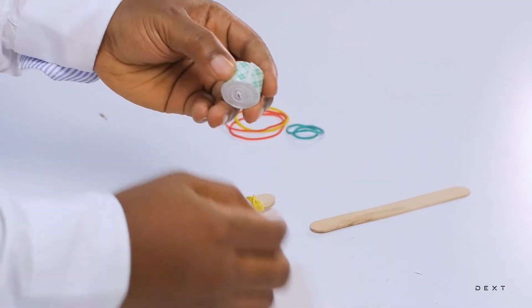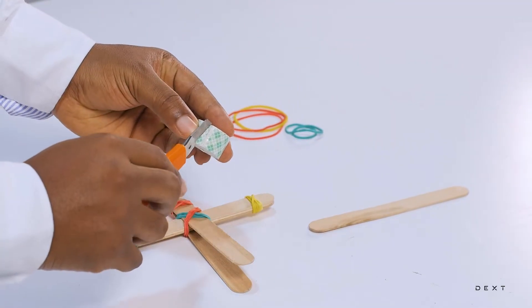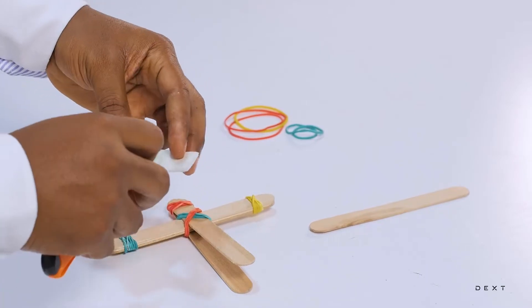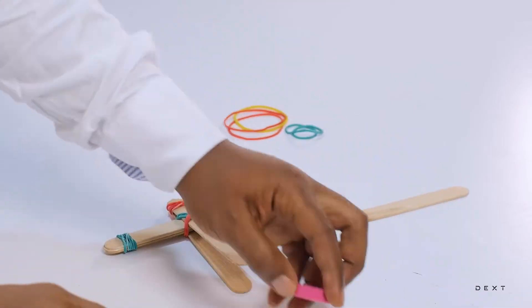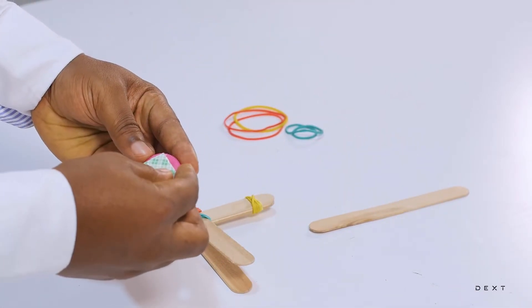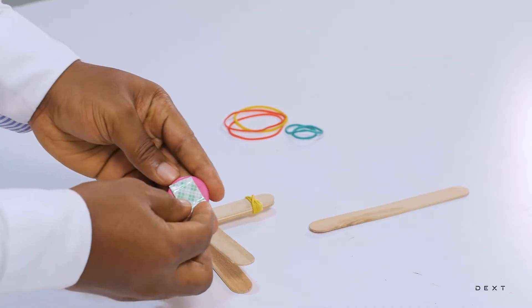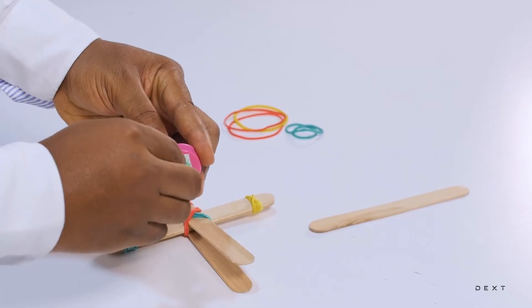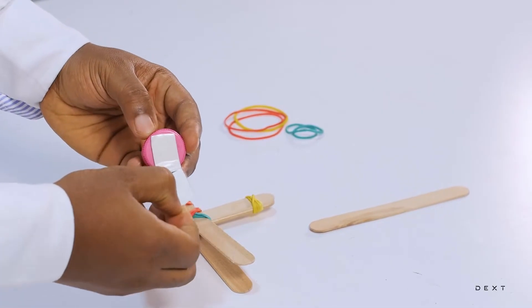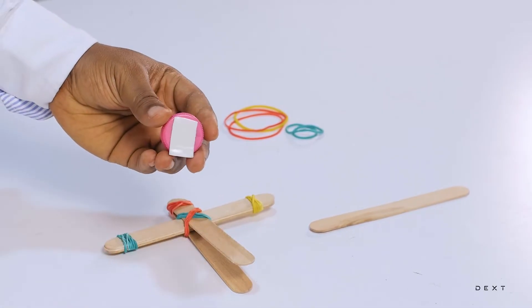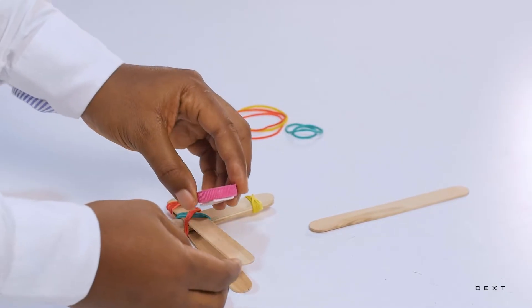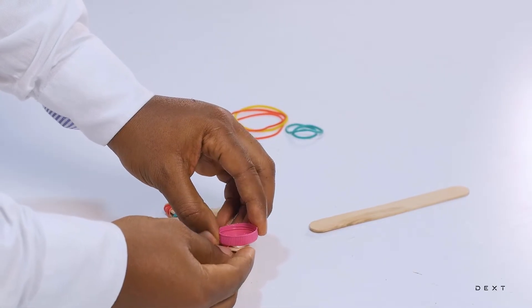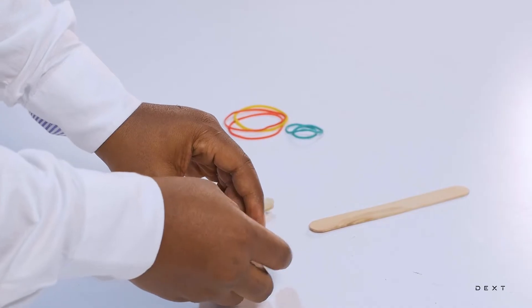So, you are going to take your double-sided tape. You are going to place the double-sided tape behind. And you are going to remove the upper layer.